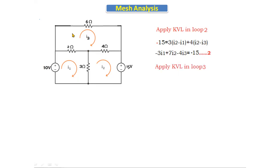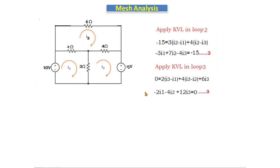Applying KVL in loop three: there is no voltage source, so 0 equals 2·(I3 − I1) for the 2Ω resistor common to loops three and one, plus 4·(I3 − I2) for the 4Ω resistor common to loops three and two, plus 6·I3 for the 6Ω resistor carrying only I3. Simplifying: −2·I1 − 4·I2 + 12·I3 = 0. This is equation number three.